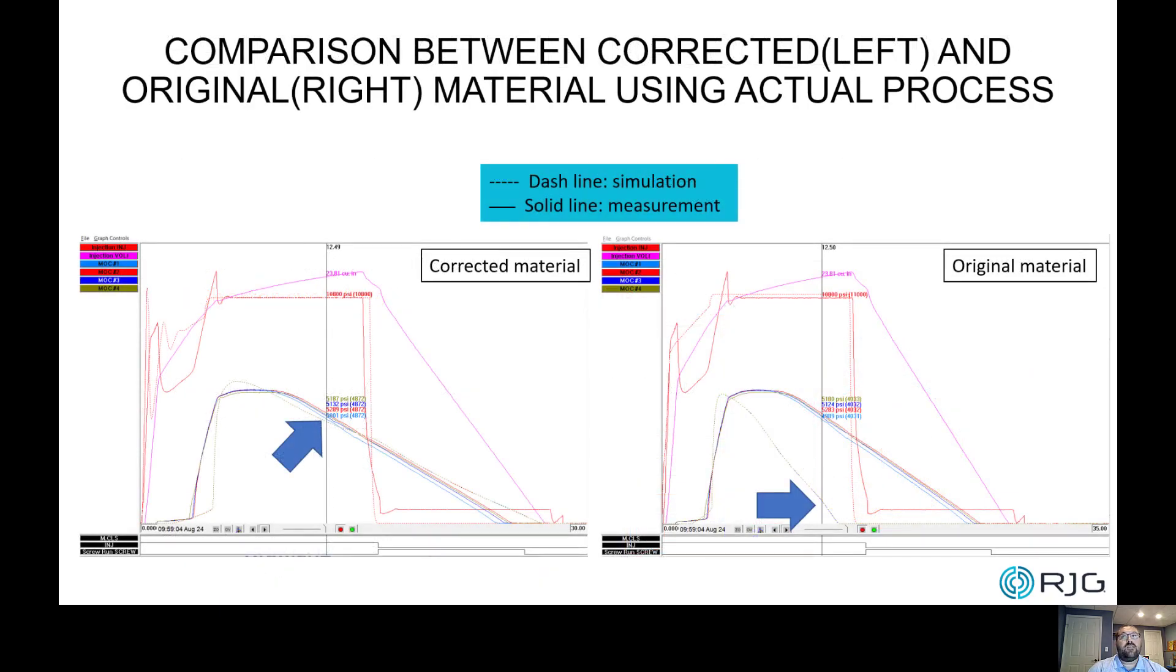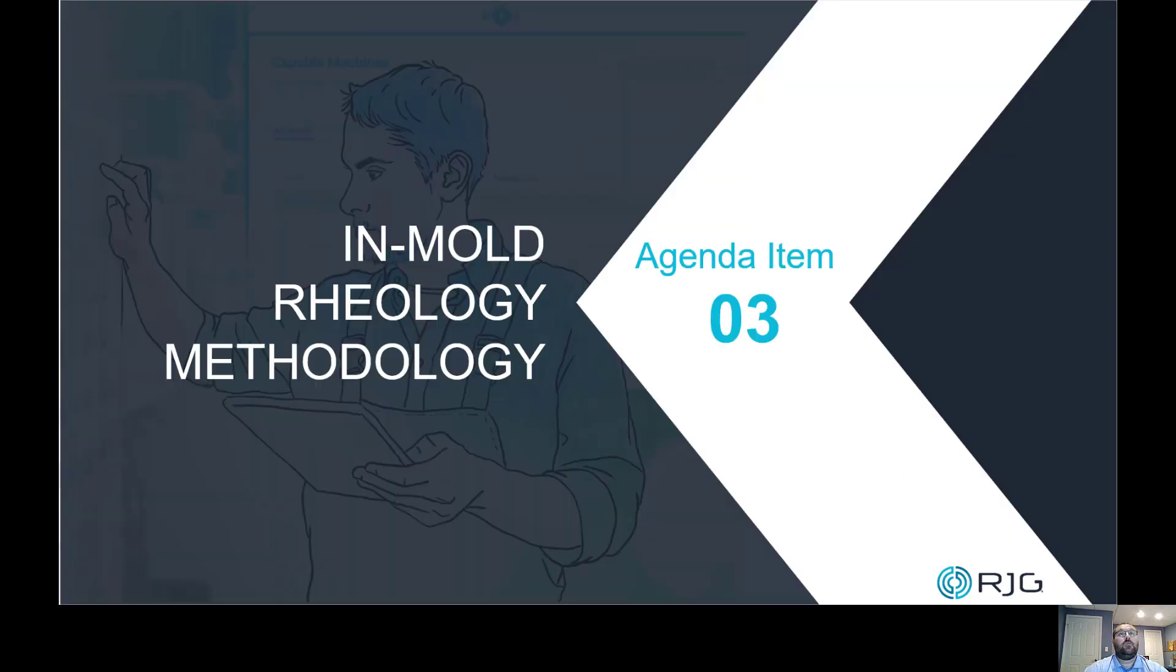To summarize, the material properties, in this case thermal conductivity, is the critical parameter that led to misprediction of the forecasted process and cavity templates. The question is, how can we avoid this from happening in the future? Are there effective solutions to verify the material properties are adequate? Agenda item number three, in-mold rheology methodology.